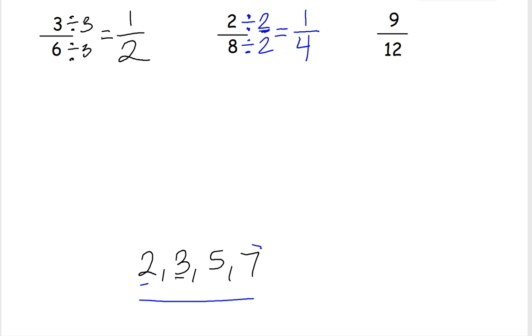All right, what about 9/12? Well, I can divide both 9 and 12 by 3. So we're going to divide both these numbers by 3. 9 divided by 3 is 3, and 12 divided by 3 is 4. So 3/4 is just a simpler way of writing 9/12.